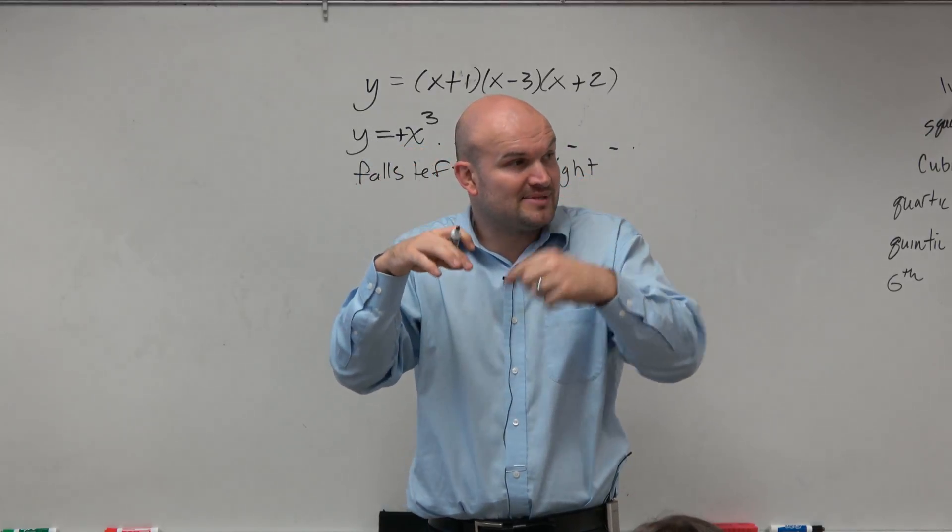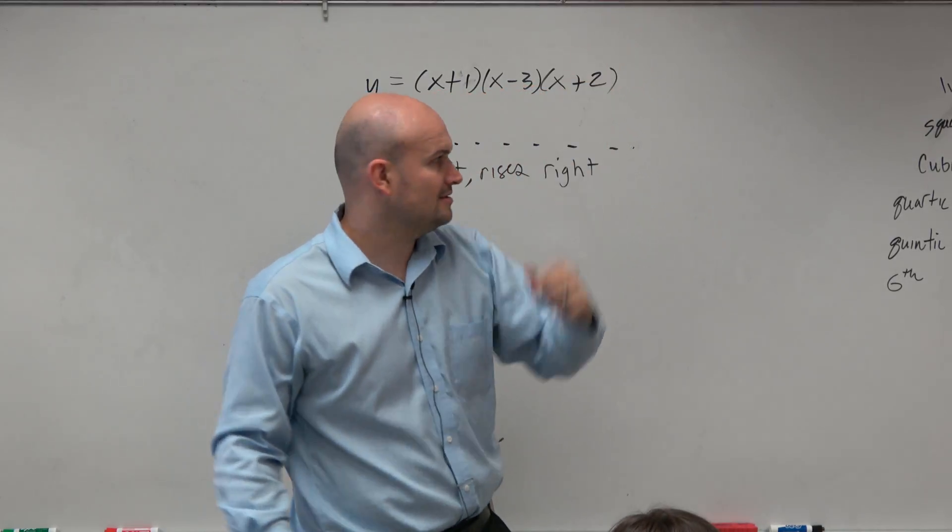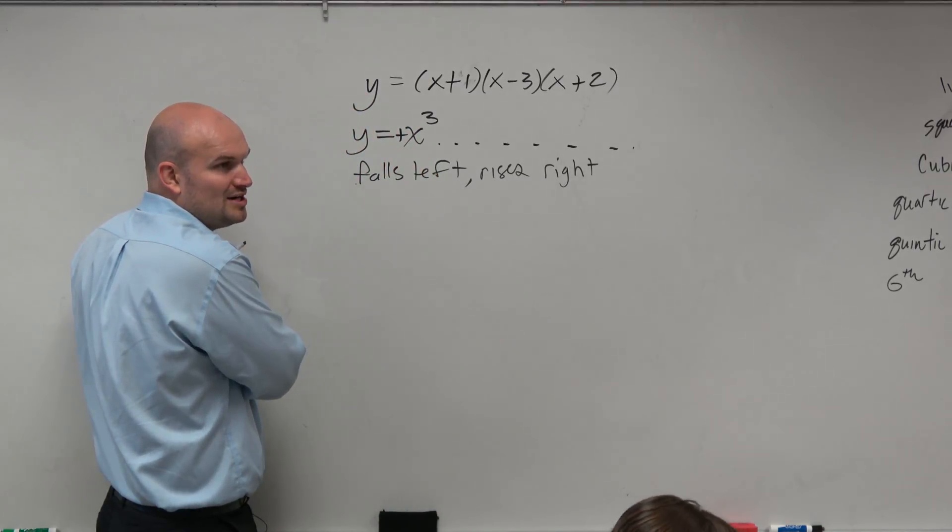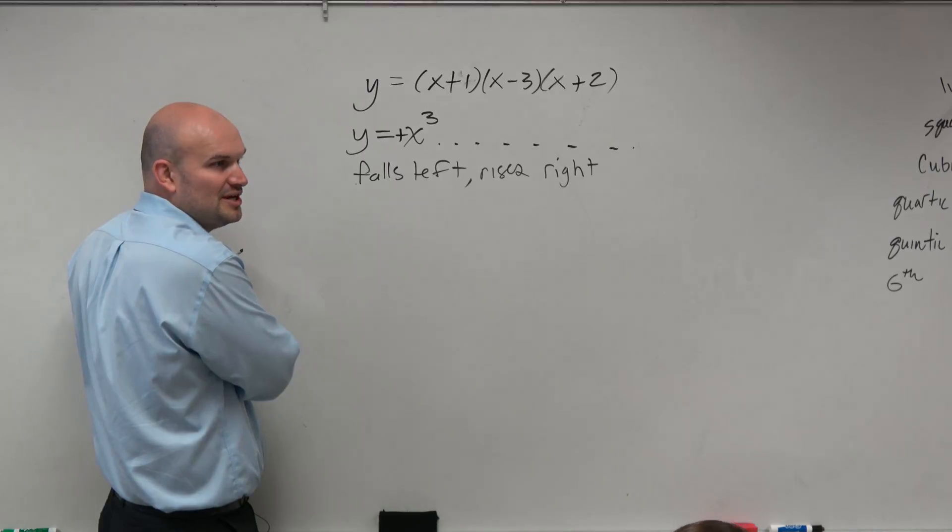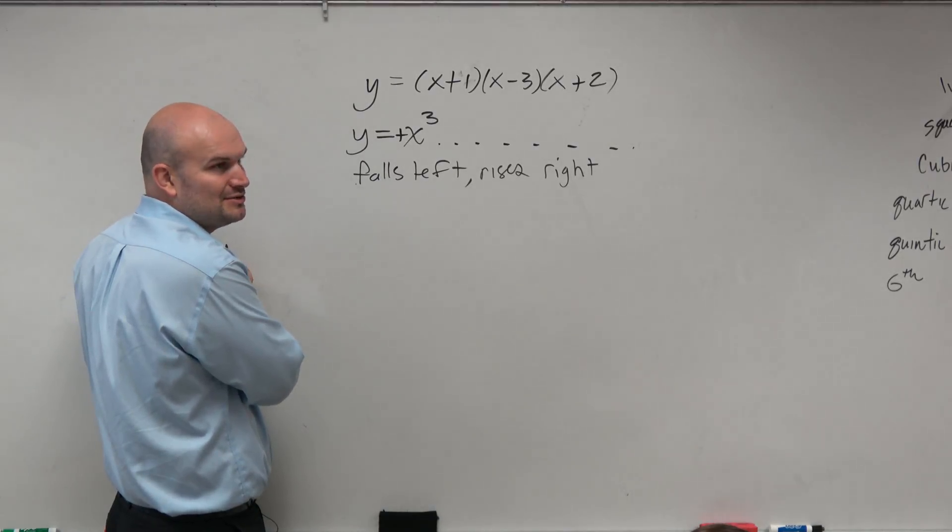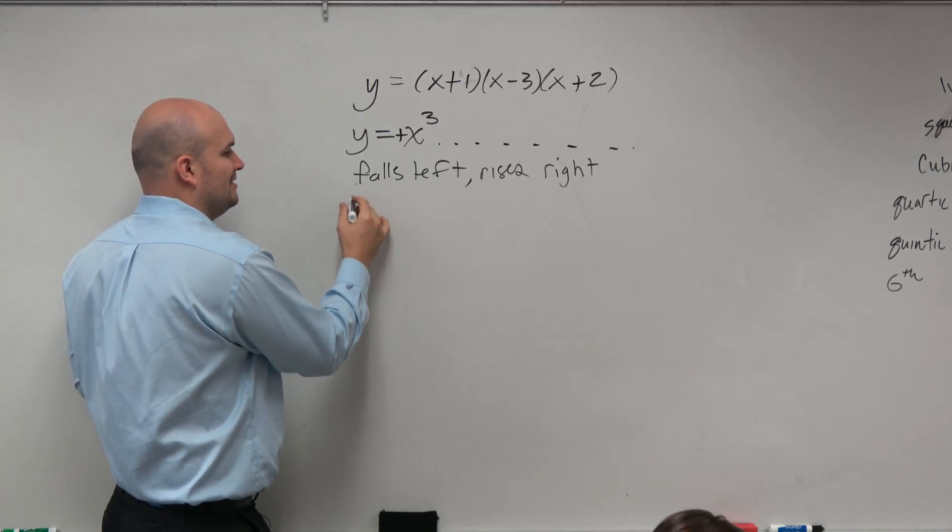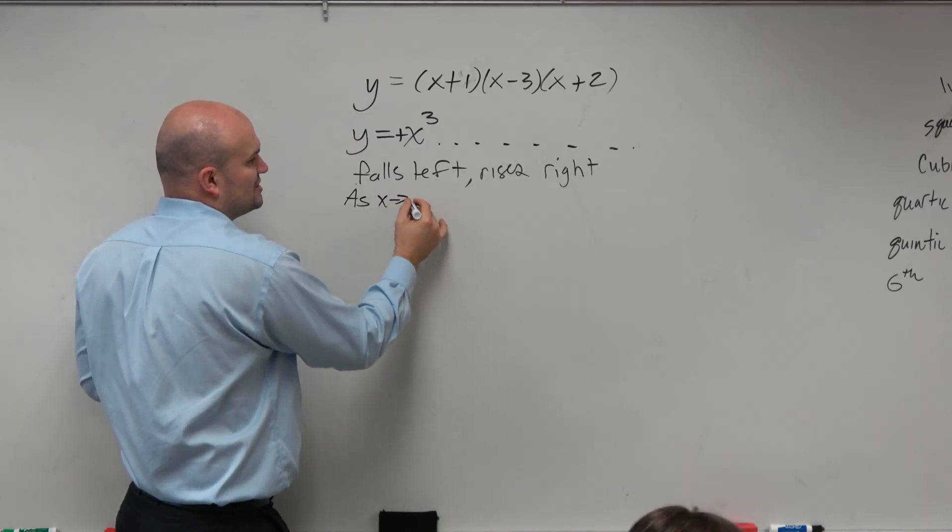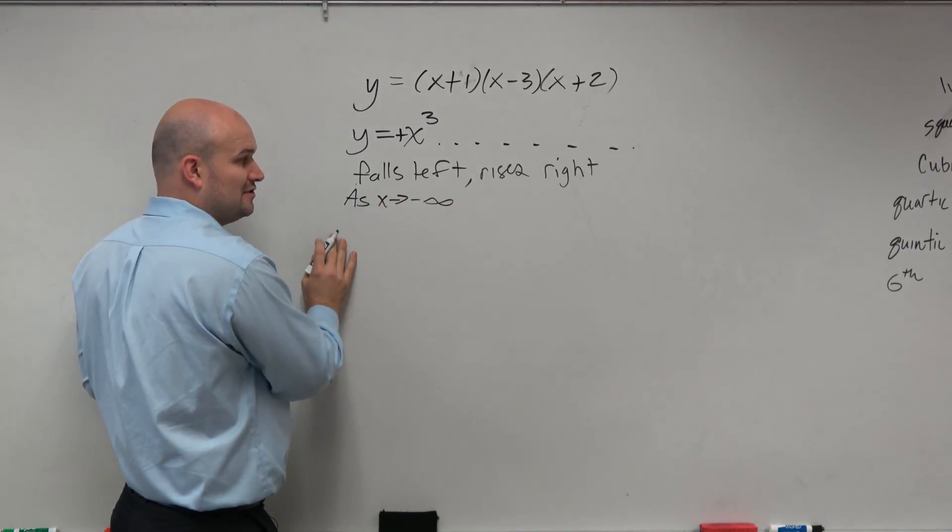So immediately, once I see that, I'm saying okay, falls left, rises right. It's like that. But then, since my question on my quiz in precalculus will say write this out using this notation or using limits, I would have to say, okay, so falls left means as x approaches negative infinity. That means as the graph goes to the left.